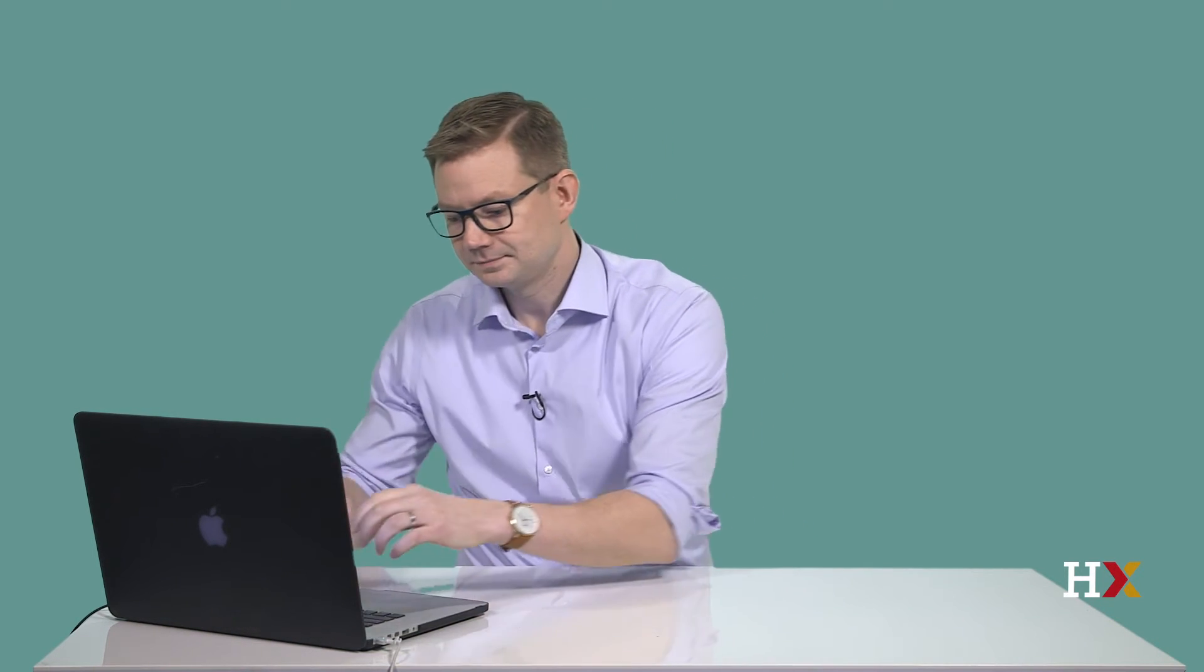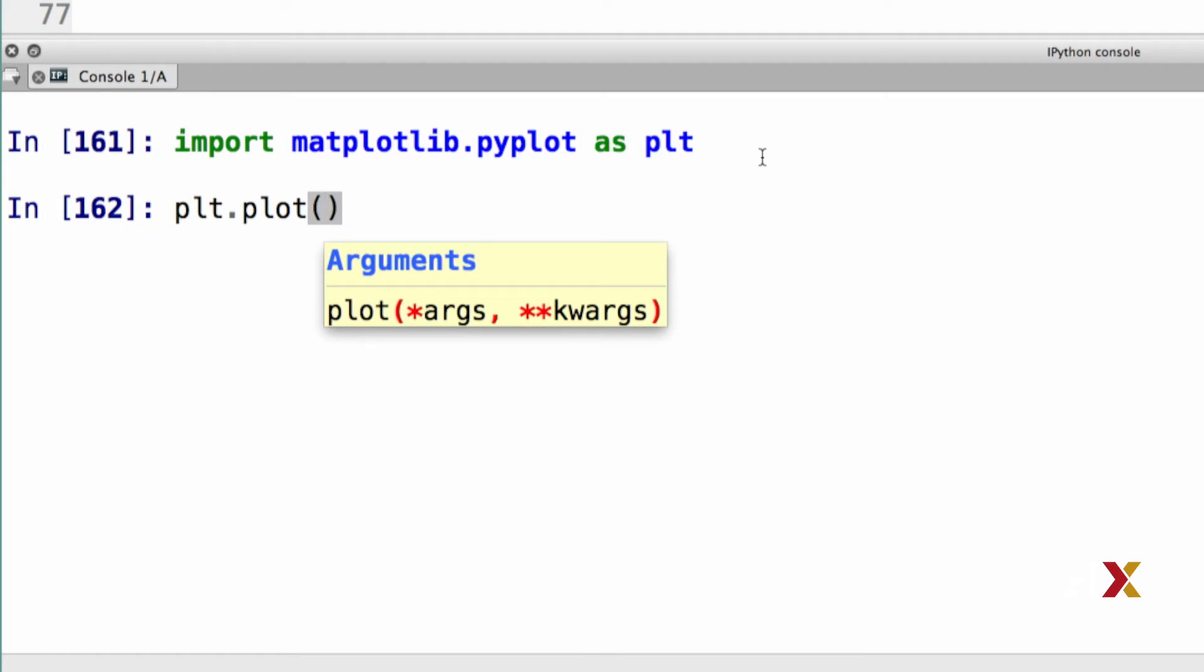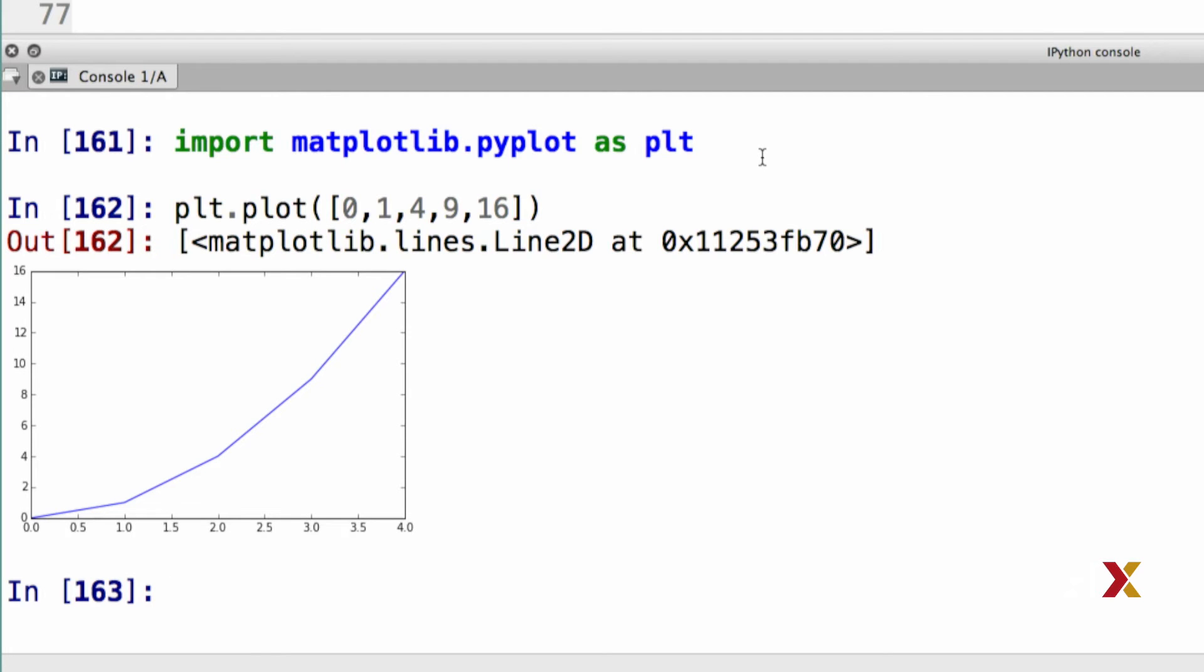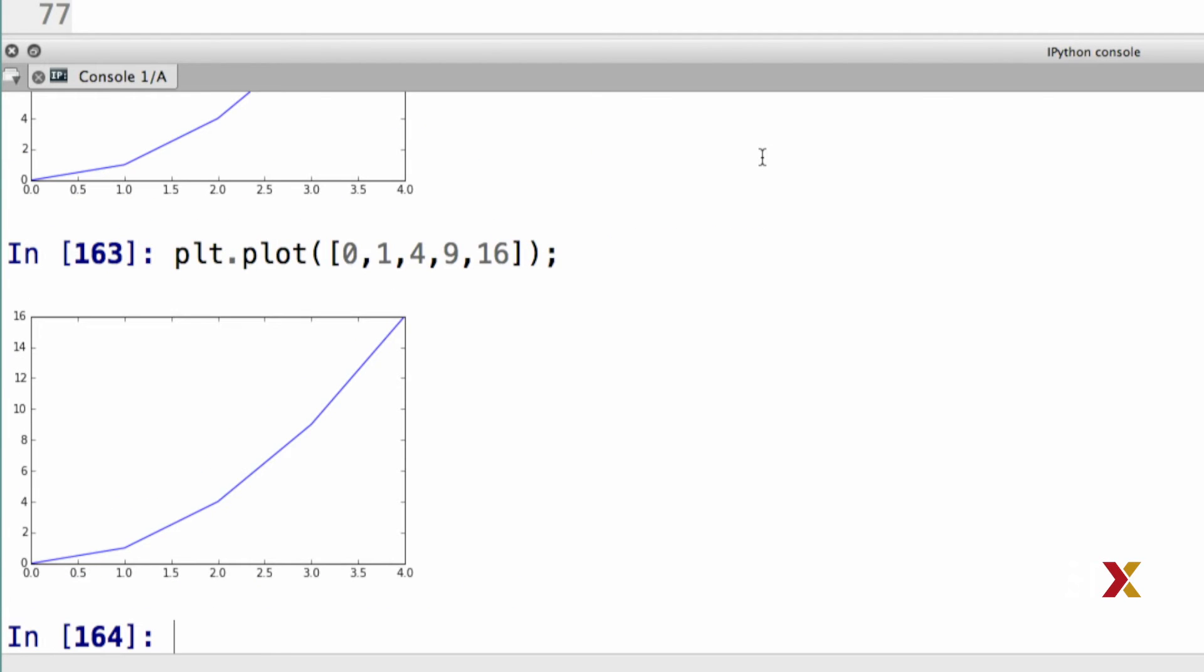Let's now practice using the plot function in the IPython shell. Let's start by making a simple plot. So we'll say PLT.plot. I'm going to create a list consisting of the numbers 0, 1, 4, 9, and 16. You can see here that Python returns a Matplotlib object. If for some reason you'd like to suppress the printing of that object, in the IPython shell you can add a semicolon at the end of the line, and that will do the job. If we rerun this with the semicolon at the end, you'll see that the plot still appears, but we don't get that Matplotlib object printed out.